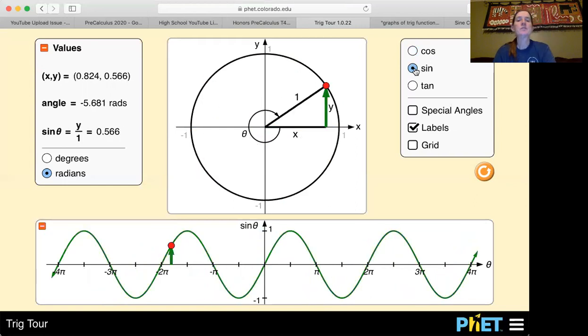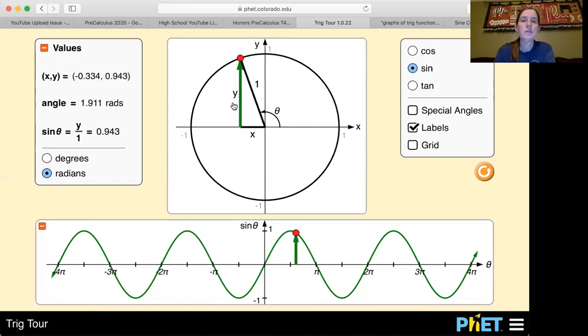How sine, remember sine is the y value. So if we were to start back at 0, the y value is 0. And then as the angle increases, the y values go from 0 to 1, back to 0, back to negative 1, and back to 0.